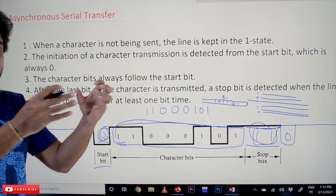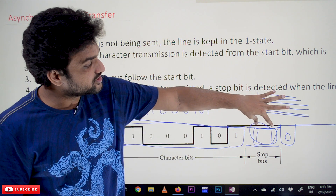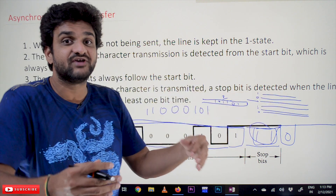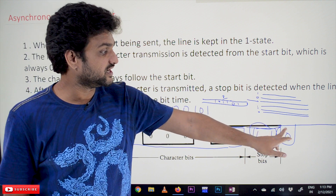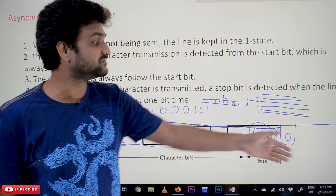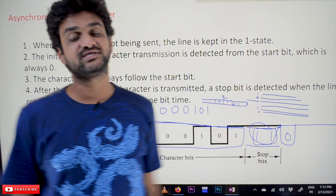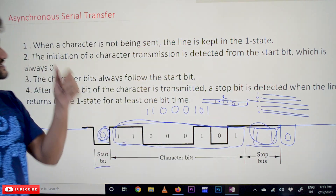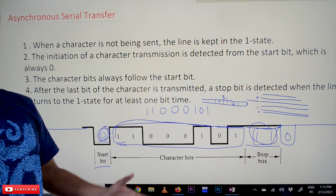After receiving all 8 bits, the last 2 stop bits are going to be 1. After that, if any character is pressed, it is again going to take the start bit as 0. If nothing has been pressed, the signal continuously remains at 1. This is how the asynchronous serial transfer will happen.